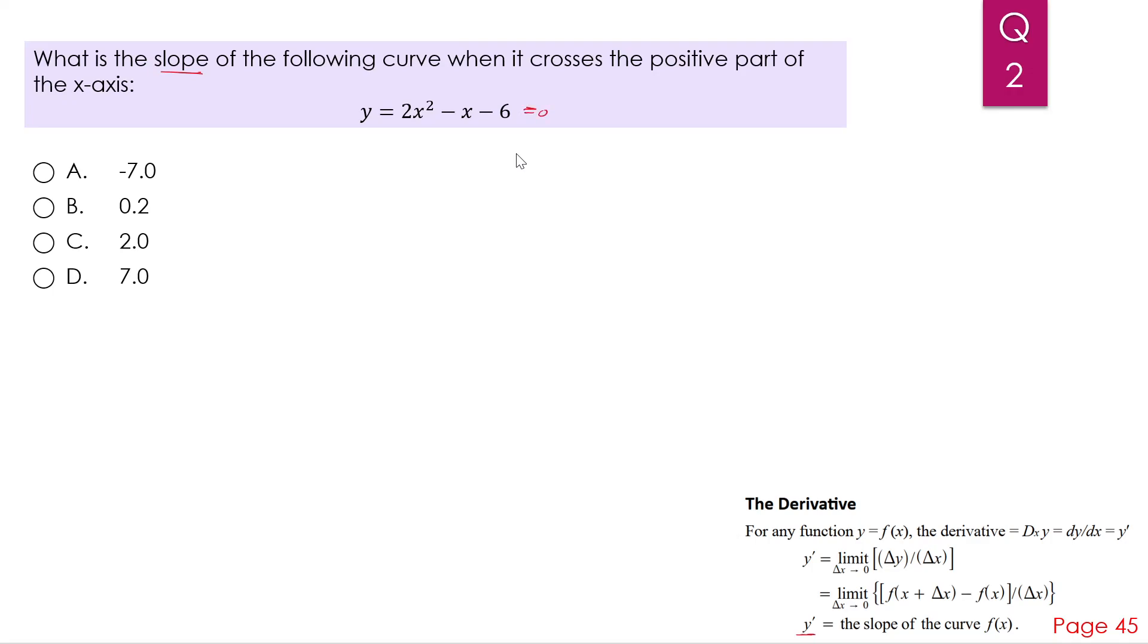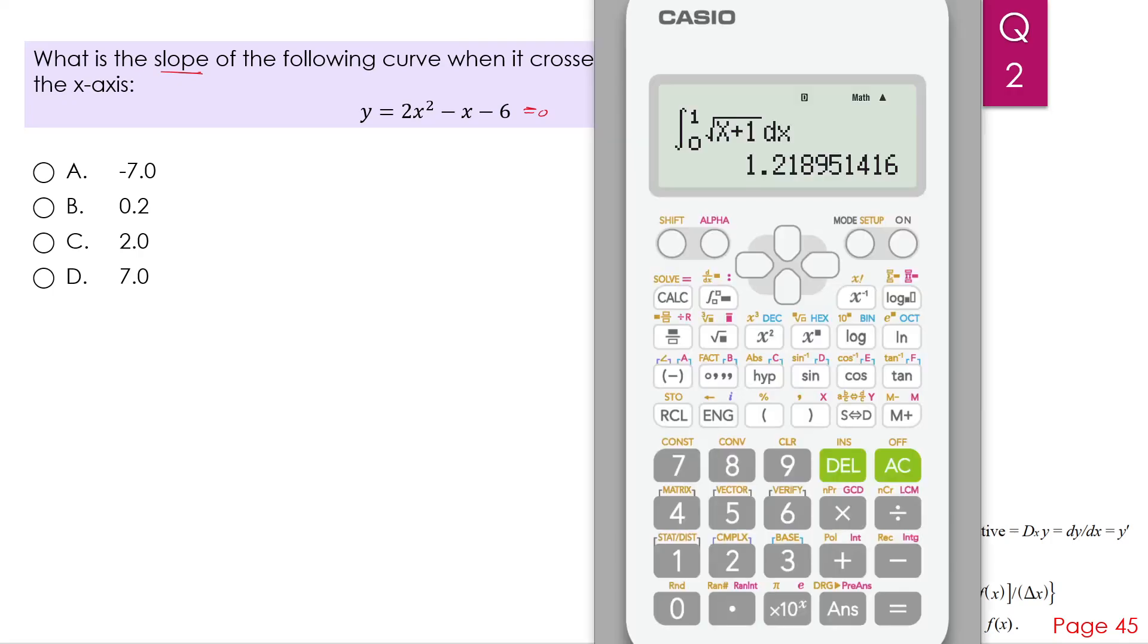In order for us to know when this function crosses the x-axis, that means the y value equals 0. So we need now to find the root of this equation, so we can do it using our calculator. So first we go to mode, then we go to number 5 equations. Now our equations, it is similar to number 3, which is ax squared plus bx plus c equal to 0. So you press 3.